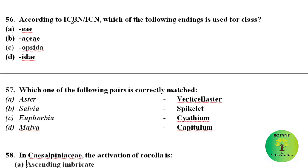According to ICBN/ICN, the ending used for the class rank: ICBN stands for International Code of Botanical Nomenclature until 2011, and from 2011 onwards it is known as ICN — International Code of Nomenclature for Algae, Fungi and Plants. The correct ending used for classes is '-opsida'.